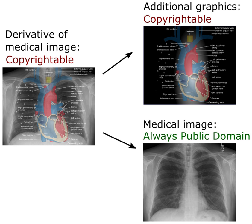Since 2004, all current licenses other than the CC0 variant require attribution of the original author, as signified by the BY component. The attribution must be given to the best of ability using the information available. This generally implies: include any copyright notices — if the work itself contains copyright notices placed there by the copyright holder, those notices must be left intact or reproduced in a way reasonable to the medium in which the work is being republished.